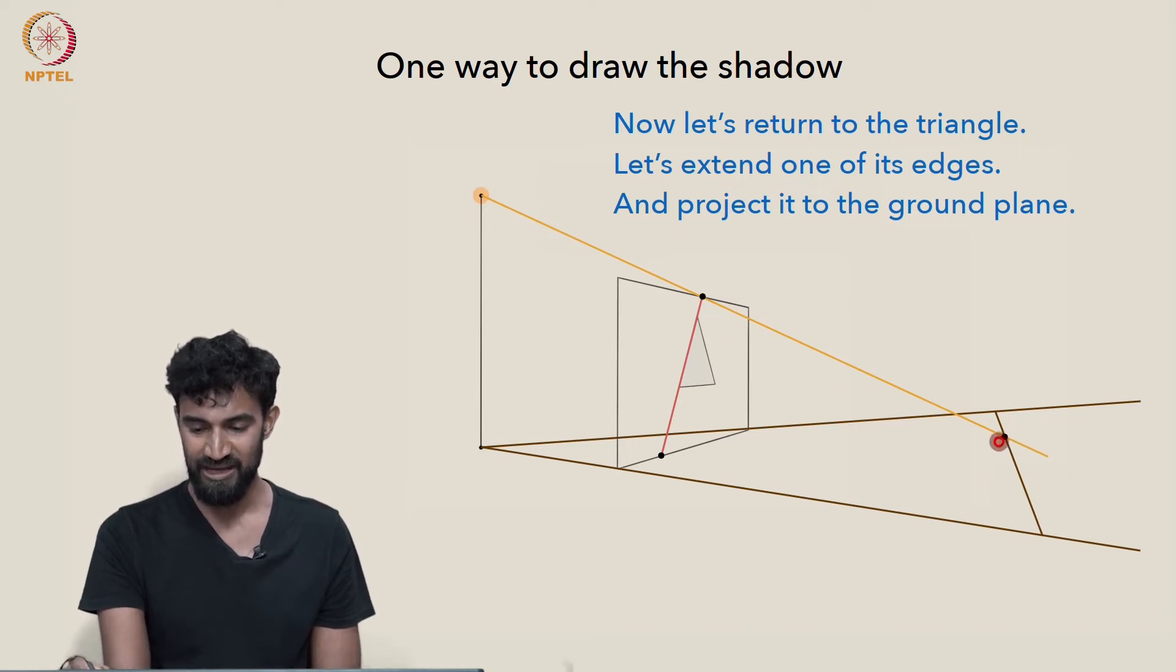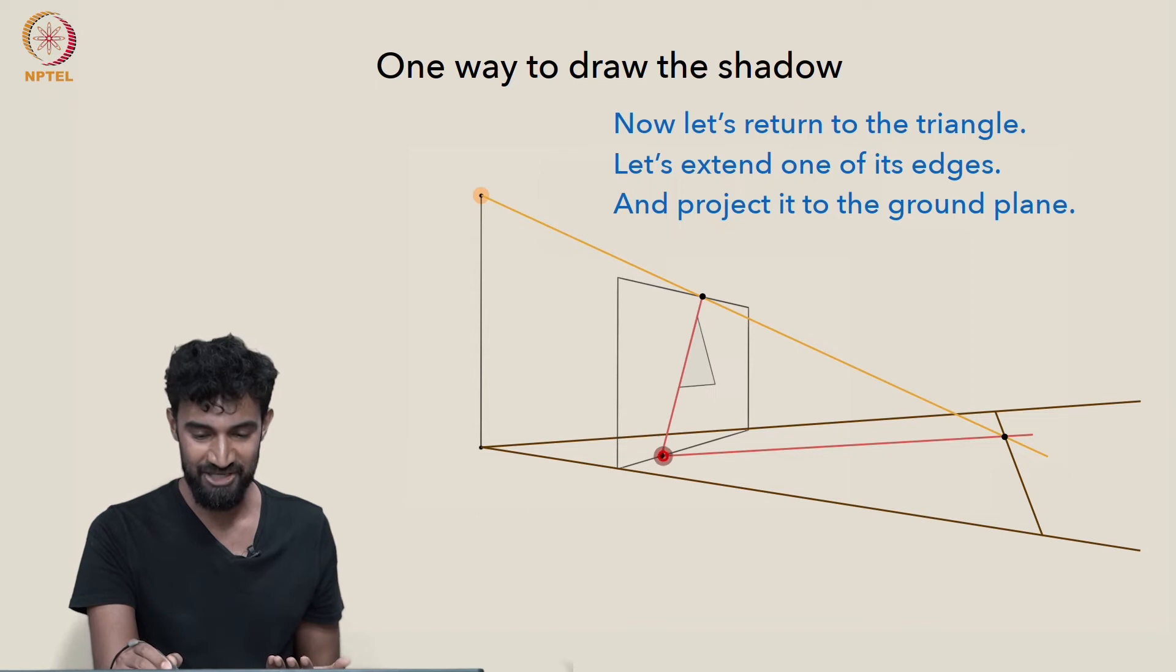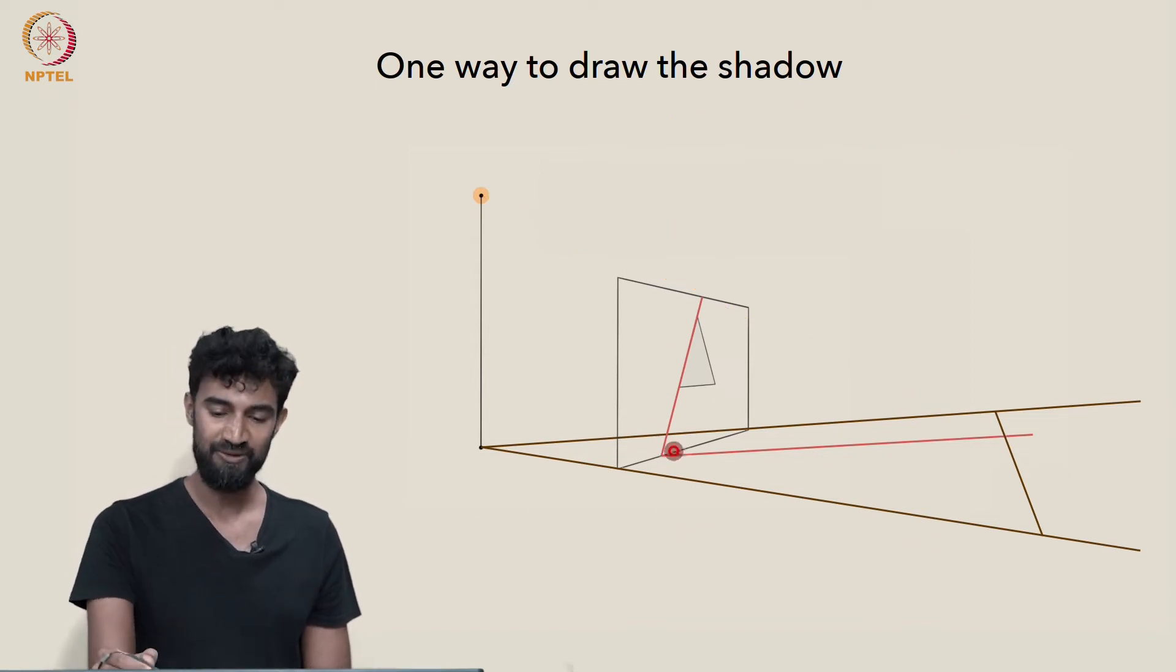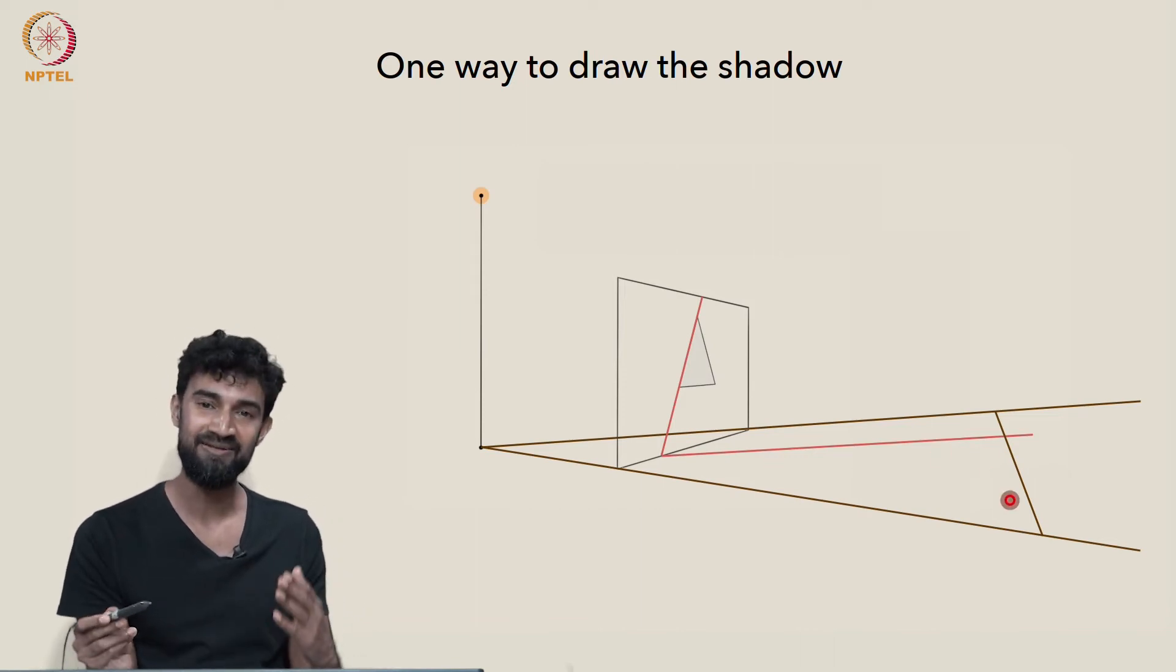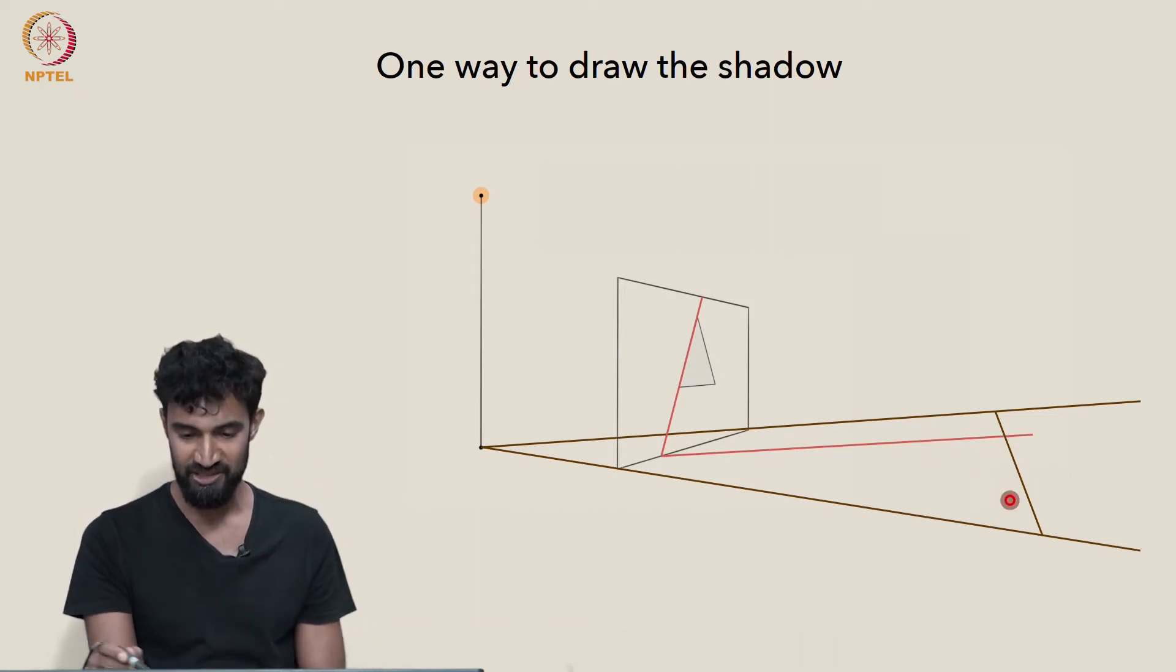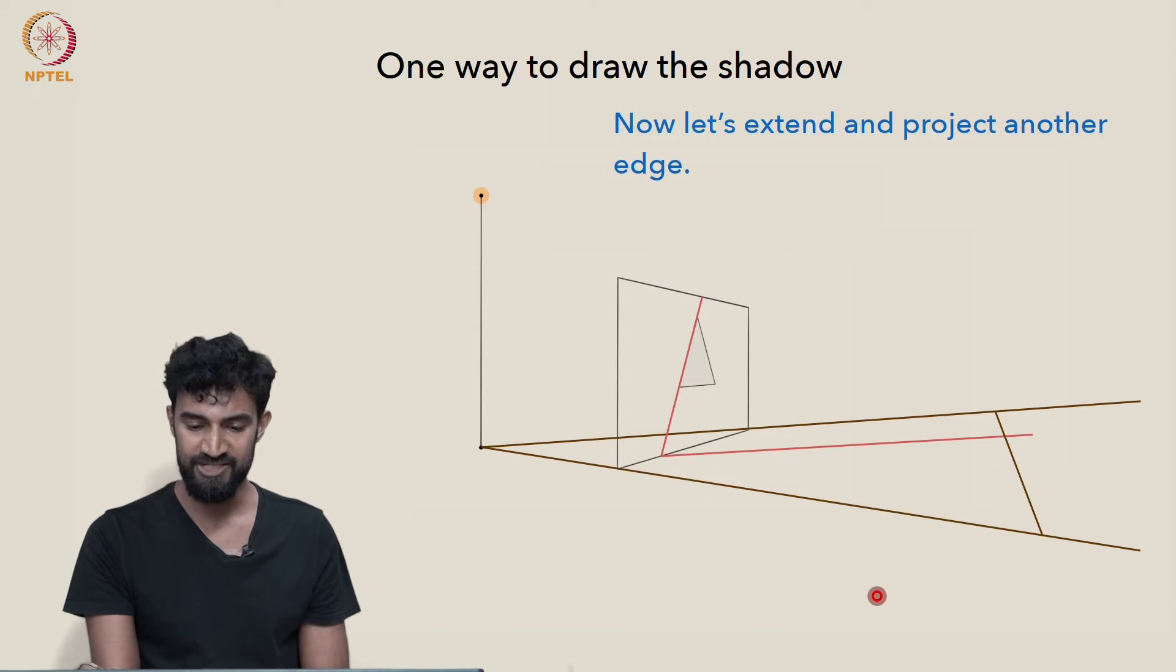So we get this line as well. And now we can just connect these together. And there we go. We get the image of this edge. So, okay, we're like one third of the way there. We've gotten the image of one of the triangle's edges, its shadow. Let's do another one.